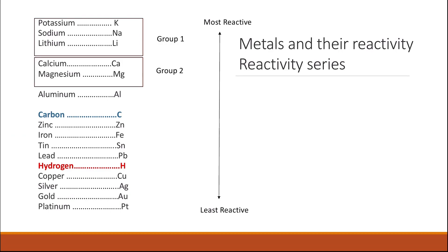That is followed by group two elements, which are less reactive than group one. Again, as we go down the group, reactivity increases, so calcium comes before magnesium. Then we have group three, which is aluminium.